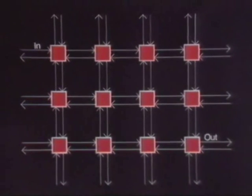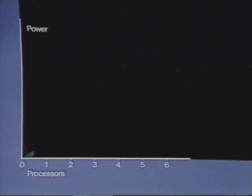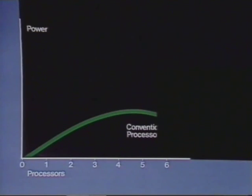In fact, communications capability increases as more transputers are added into the system. But as the curve on the graph dramatically shows, this isn't possible with a conventional microprocessor. As more are added, they reduce the performance of the overall system.